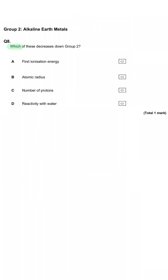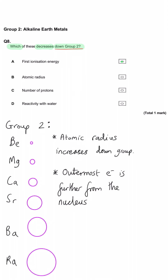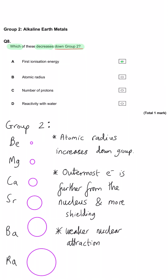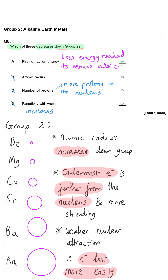Which of these decreases down Group 2? First ionisation energy — this is the correct answer. Because atomic radius increases down the group, the outer electron is further from the nucleus and there are more energy levels shielding the nucleus's attraction, making the electron easier to remove and requiring less energy. Atomic radius and the number of protons both increase down the group, and reactivity with water also increases because the outer electron is more easily lost.